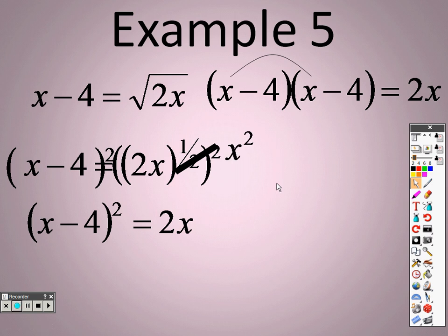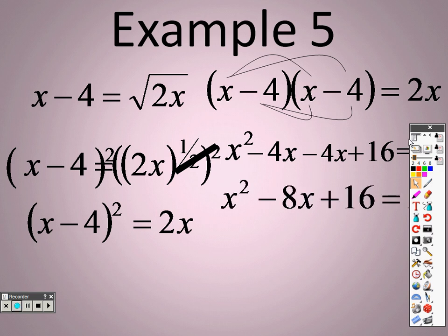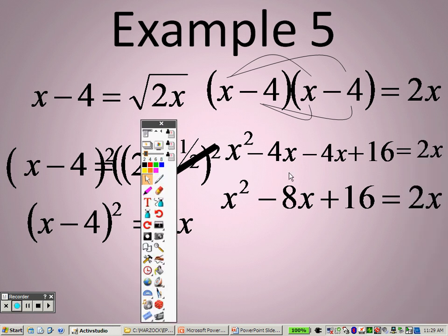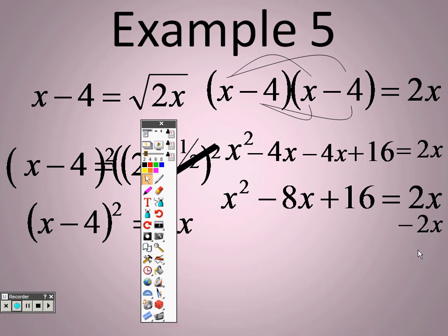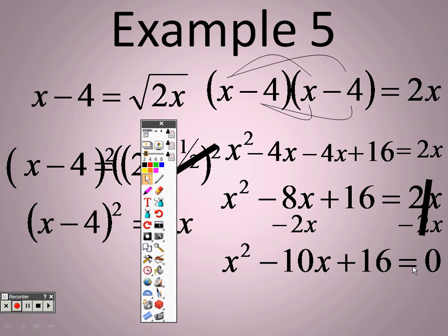I need to take x times x and get x squared. x times negative 4 and get negative 4x. Negative 4 times x, I get negative 4x. And negative 4 times negative 4 is positive 16, and bring down that negative 2x. Combine my like terms on this side, and I get x squared. That's a minus 8x plus 16 equals 2x. And since I have an x squared, more than likely, it's a quadratic equation. So why don't I get everything onto one side and try to solve it? So if I subtract a 2x onto both sides, I end up with x squared minus 10x plus 16 equals 0.